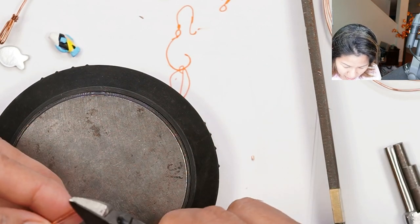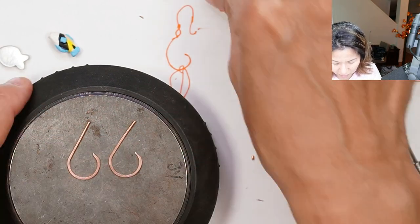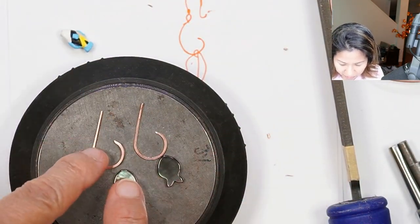Now I'm flush cutting the ends of the wire where I'm going to turn the loop so I have somewhere to attach my ear wires.